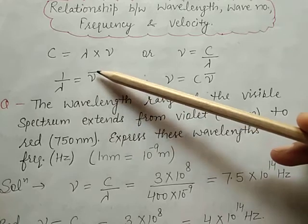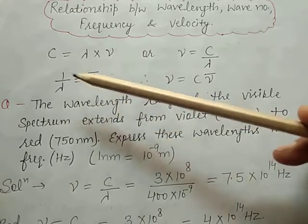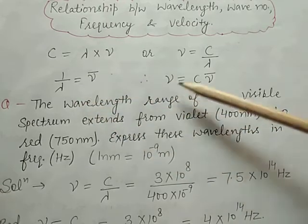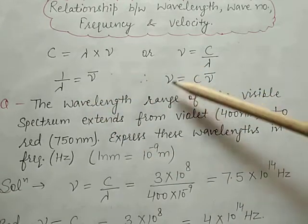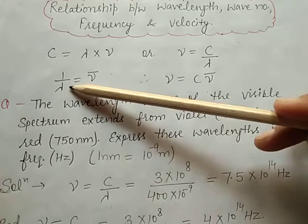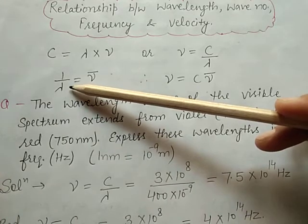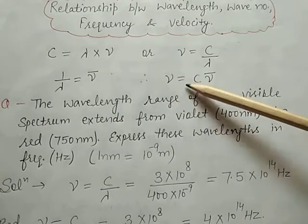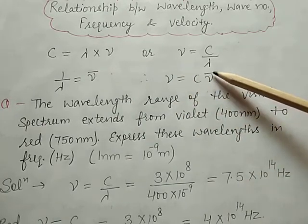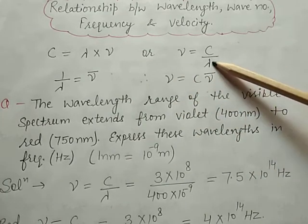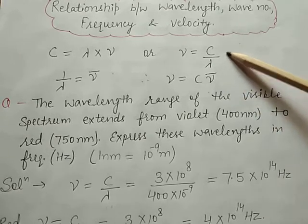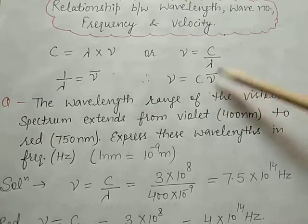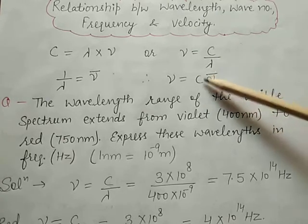Mu bar is the wave number. Wave number is equal to 1 by lambda — it is the reciprocal of wavelength. To calculate frequency: 1 by lambda is also equal to mu bar, so frequency mu is equal to C times mu bar. This means 1 by lambda equals mu bar, which is the wave number.